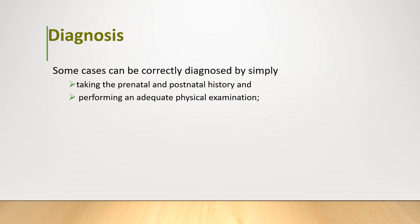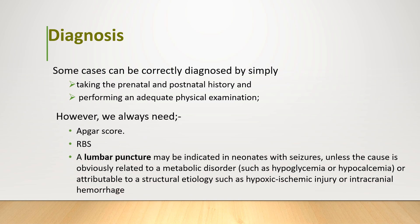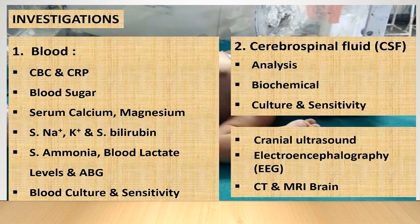Regarding diagnosis, some cases can be correctly diagnosed by taking a prenatal and postnatal history and performing a physical examination. However, we always need an Apgar score, especially if the seizure occurs within the first one or two days of life, as it may be associated with hypoxic-ischemic encephalopathy. Random blood sugar is needed, and a lumbar puncture may be indicated unless the cause is obviously metabolic or structural. Investigations include CBC and CRP, blood culture for signs of sepsis, blood sugar level, serum calcium and magnesium, serum electrolytes, blood culture and sensitivity, CSF analysis, and cranial ultrasonography. If IVH is suspected, EEG and higher imaging such as CT or MRI of the brain may also be needed.